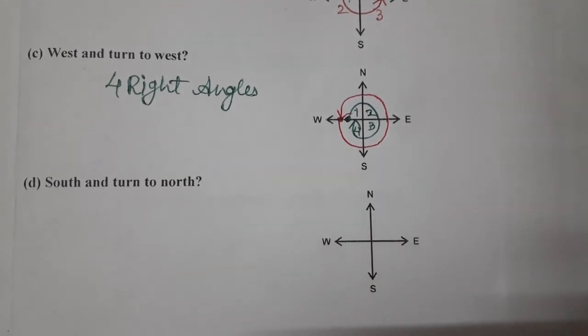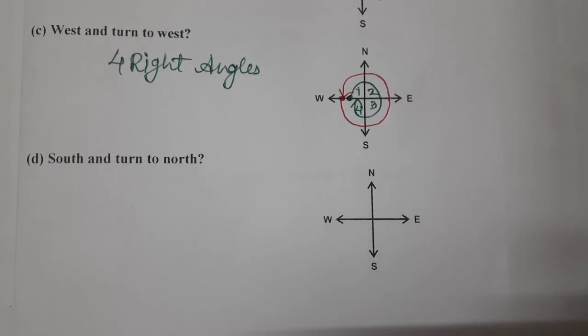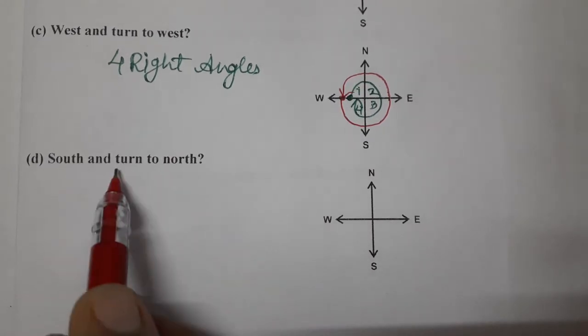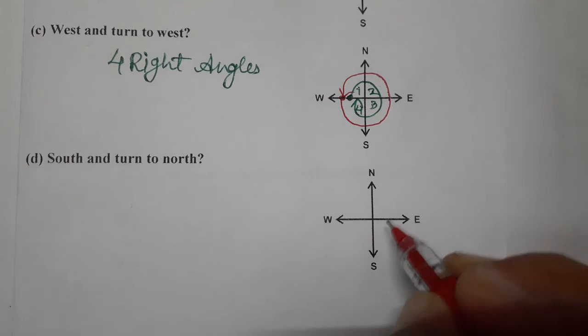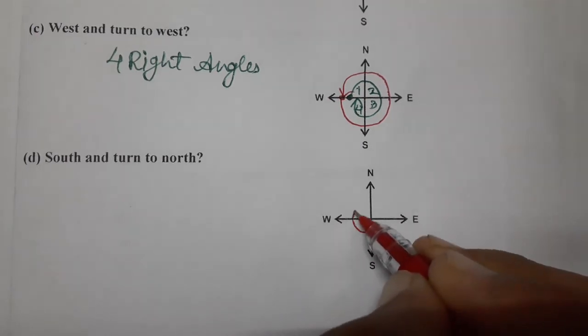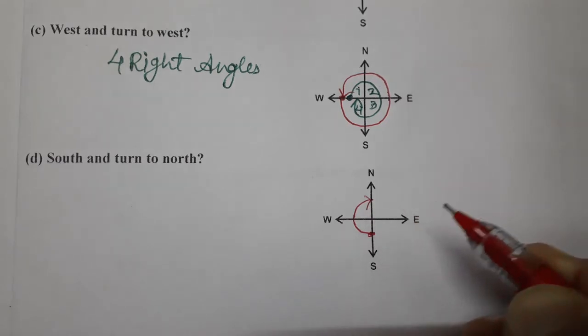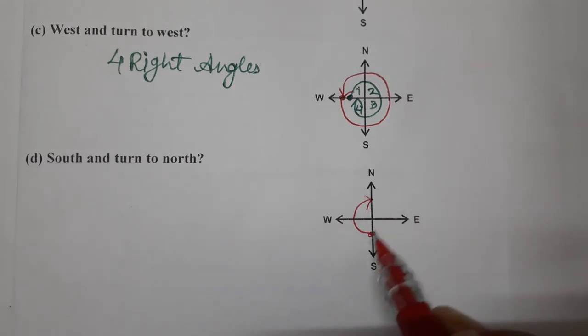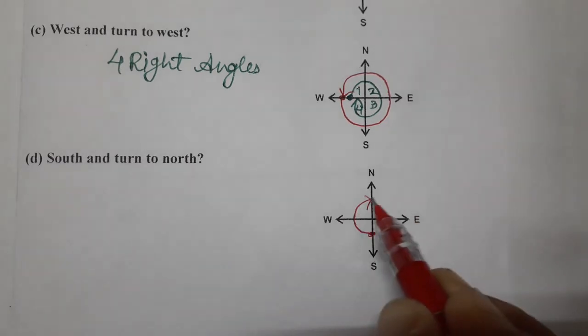Now comes to the last one, part D. South and turn to north. South and turn to north. So clockwise or anti-clockwise? Let's see clockwise. So in case of clockwise, we are at north only.